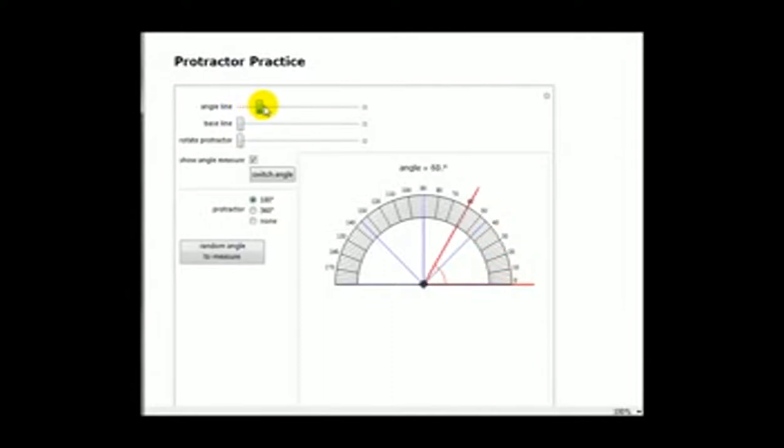For example, if we had an angle here between these two red rays, we can see that it measures 73 degrees by lining up the initial ray here and measuring from the terminal side.